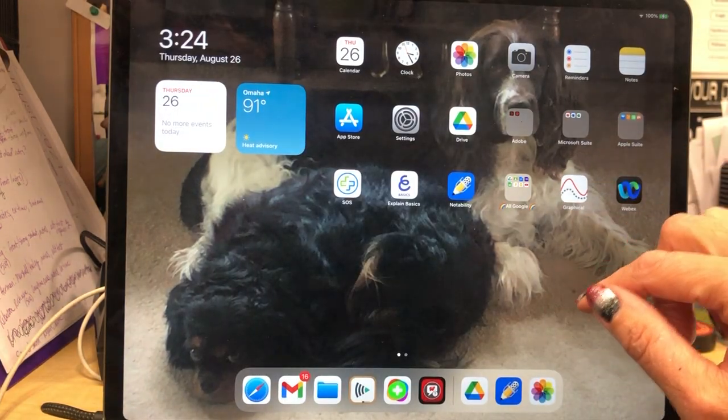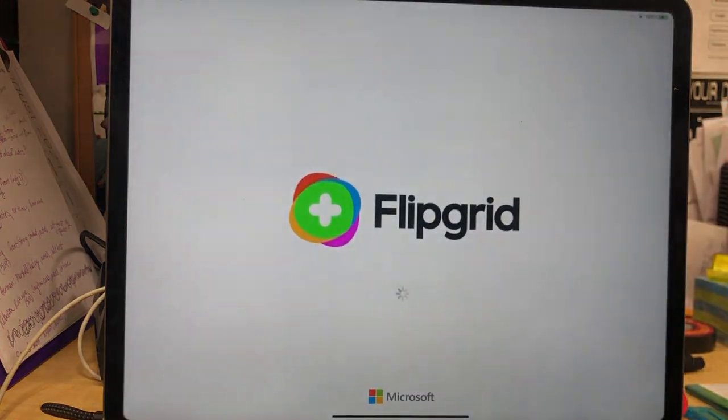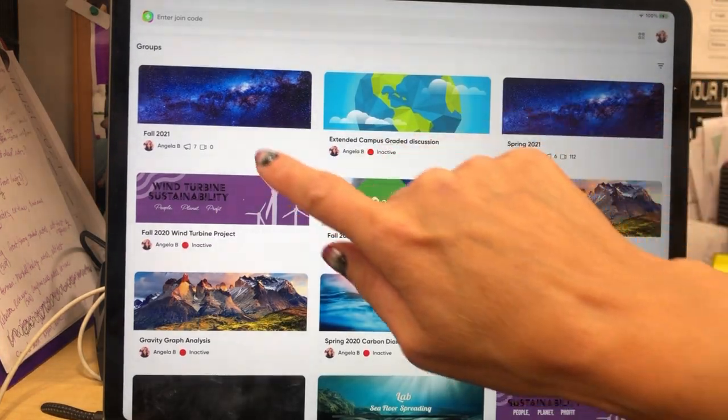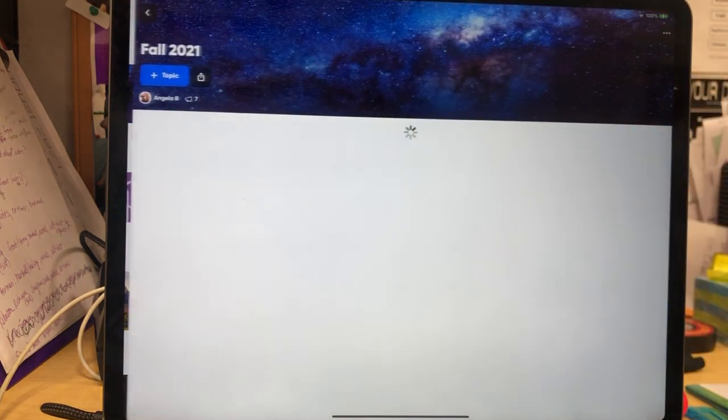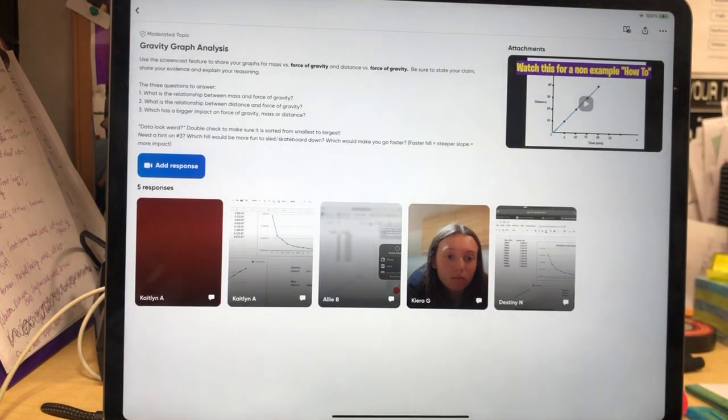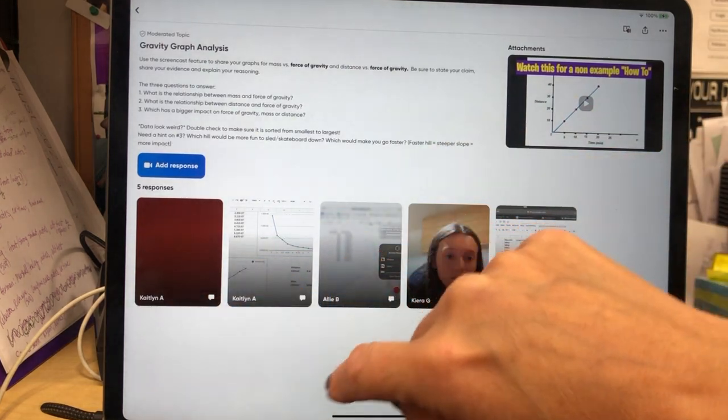So now what I'm gonna do is go to the Flipgrid app, and when I go to my Flipgrid app I'll navigate to the right spot just because you'll already have a link or whatever. So here you can see these.